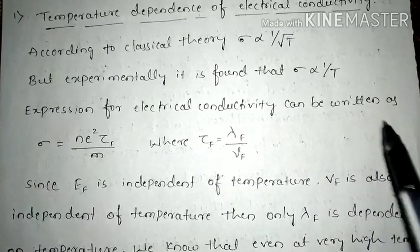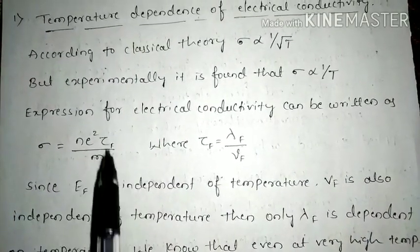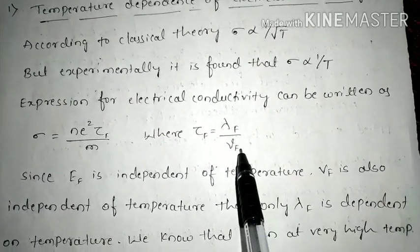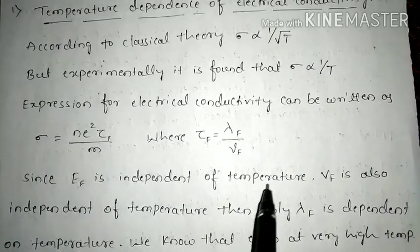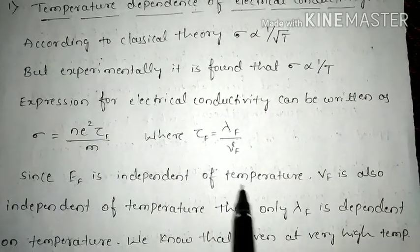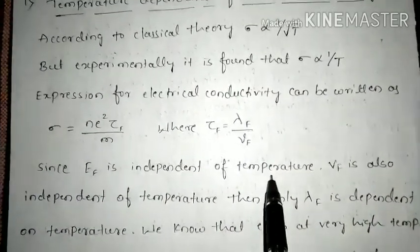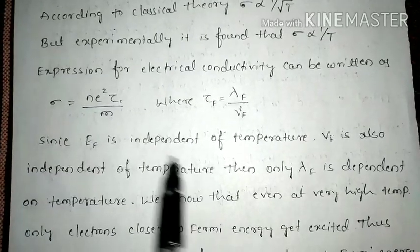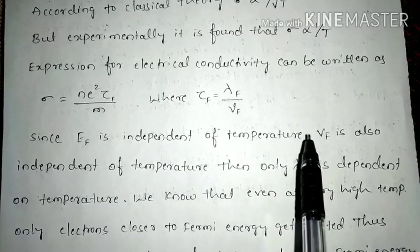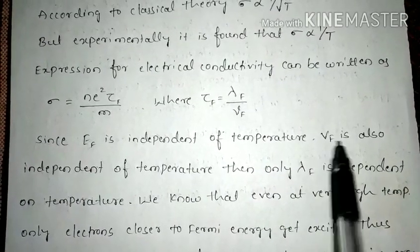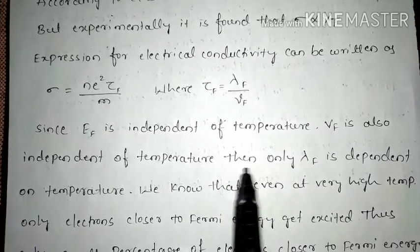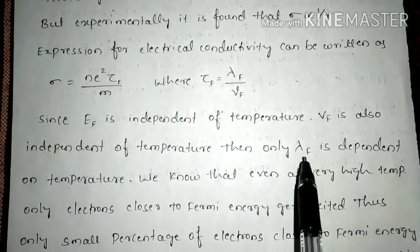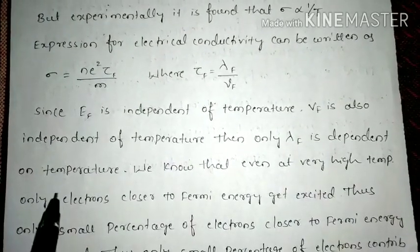The expression for electrical conductivity can be written as σ = Ne²τf / M, where τf = λf / Vf. Since Fermi energy Ef is independent of temperature, Vf is also independent of temperature. Therefore, only λf, the mean free path of the Fermi electrons, is dependent on temperature.